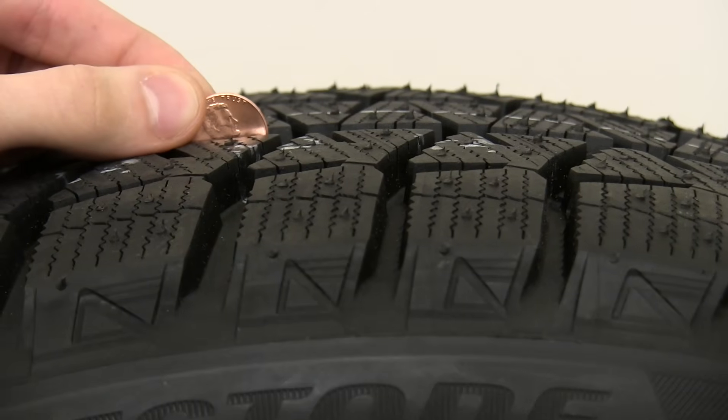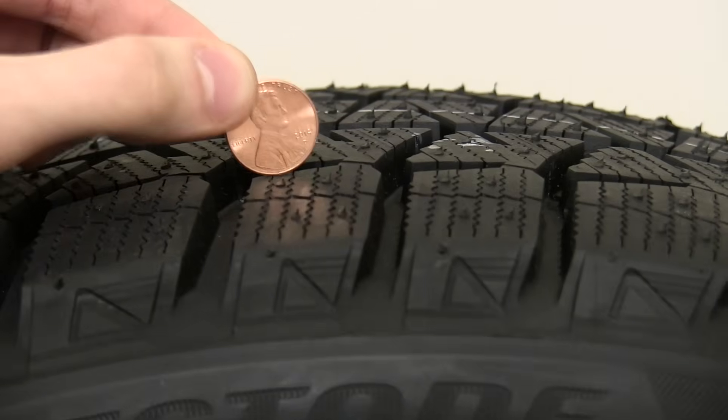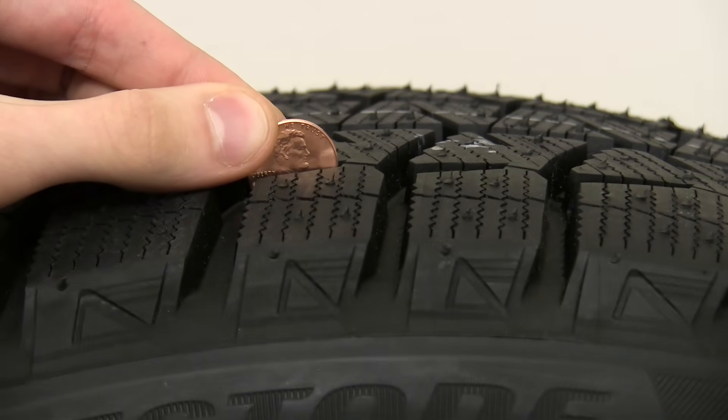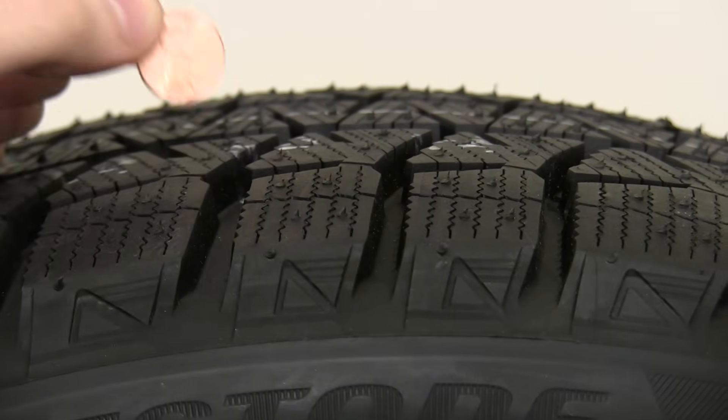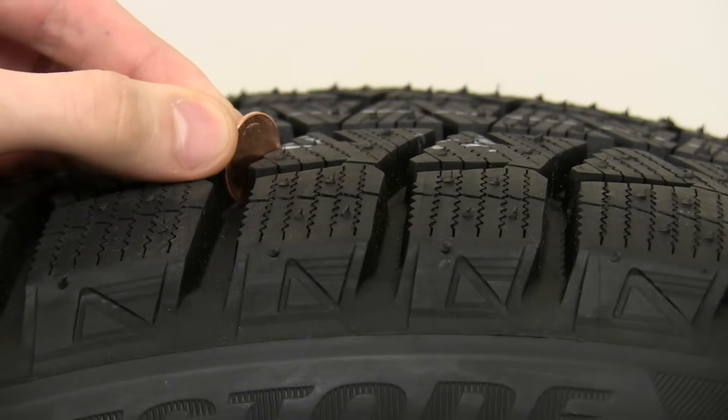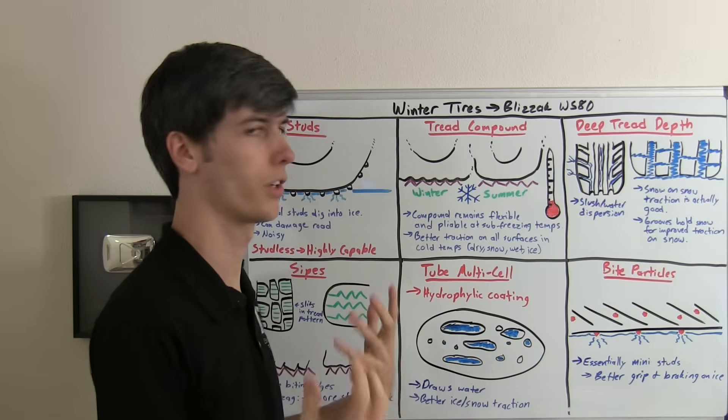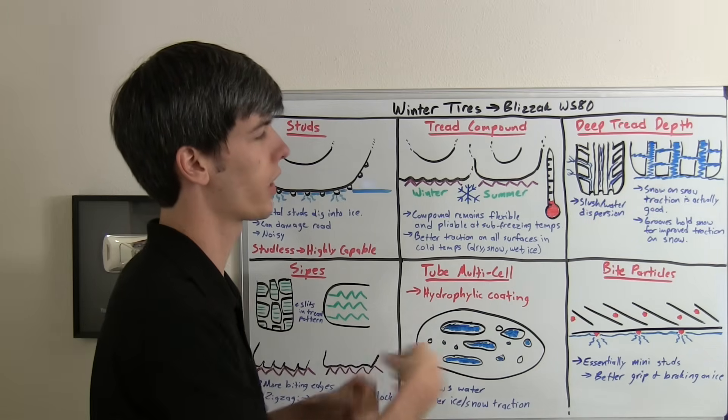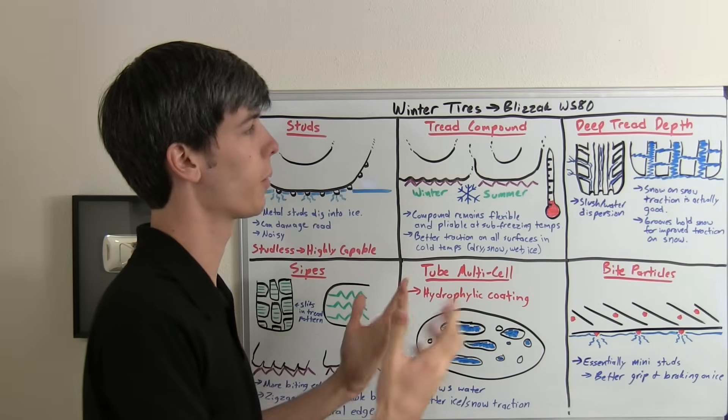Next, let's talk about the actual tread design. These winter tires are going to have a much deeper tread depth, and that's for several reasons. Basically, you want to be able to get that water and slush, the icy mixture, and disperse it out of the tire, and these deeper grooves are going to help allow you to do that.